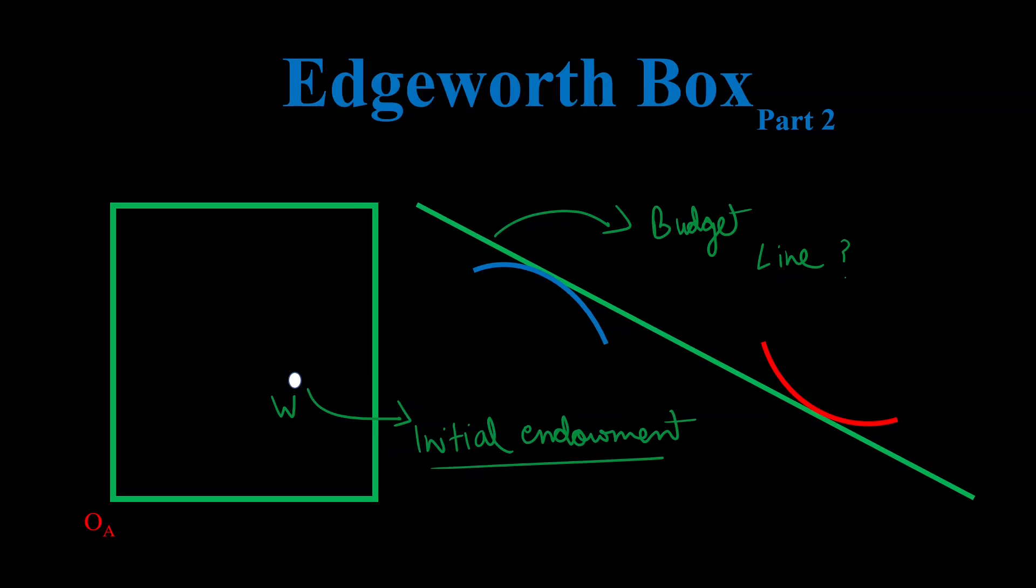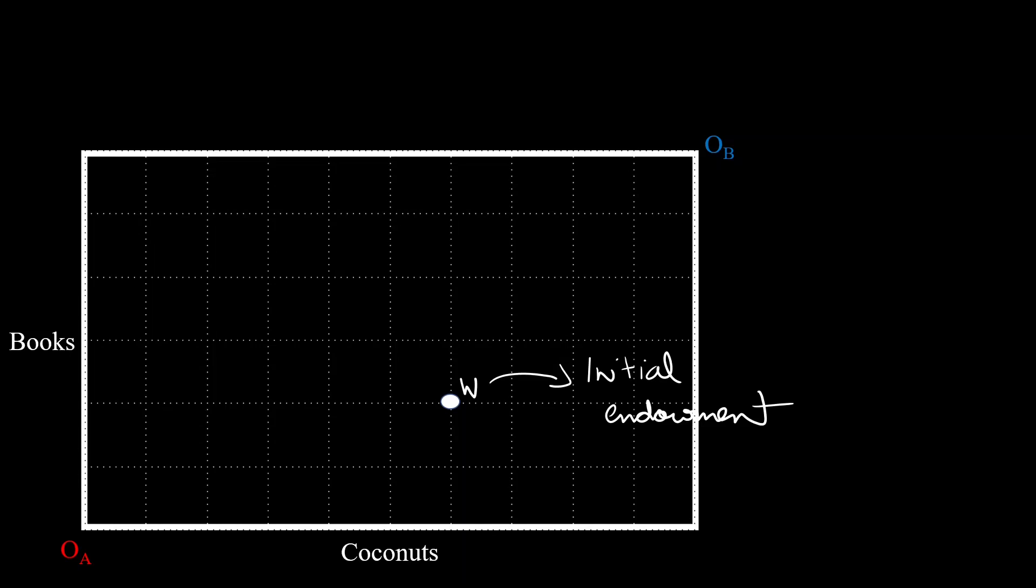Let's take a look at our Edgeworth box. It's the same setup. We have our agents A and B and same goods, books and coconuts. W is our initial endowment, which just means the amount of stuff these two agents have initially. We can calculate it using what we learned in our last video. For A's endowment, OA will be the point of origin and it turns out to be six coconuts and two books. For B's endowment, OB will be the point of origin and it turns out to be four coconuts and four books.